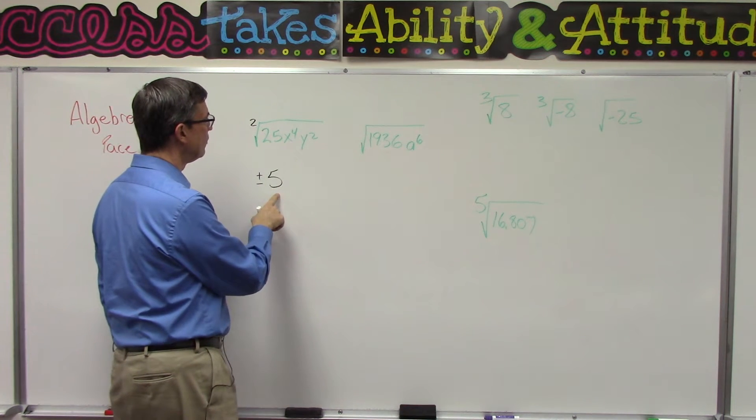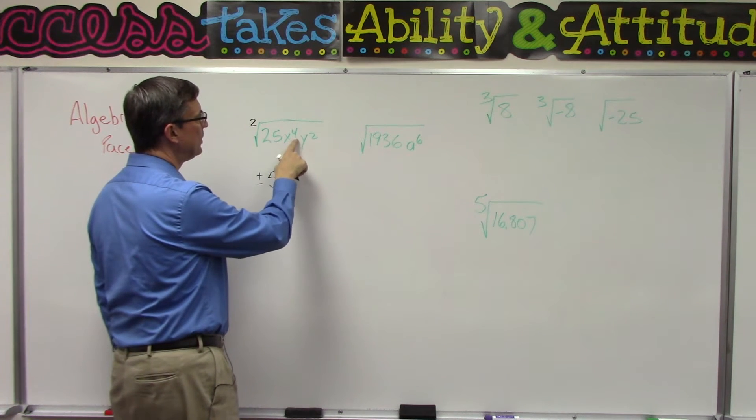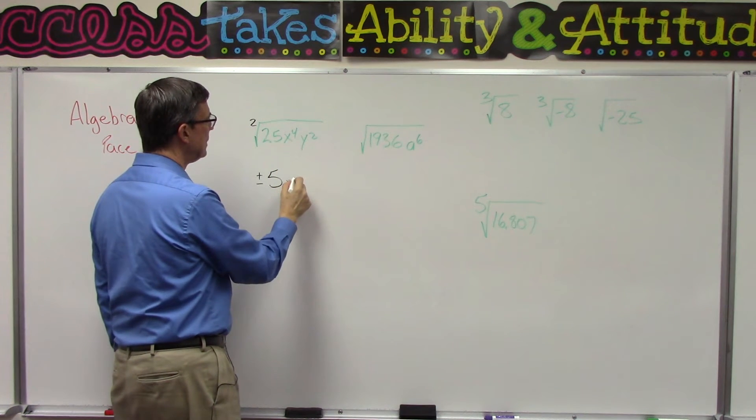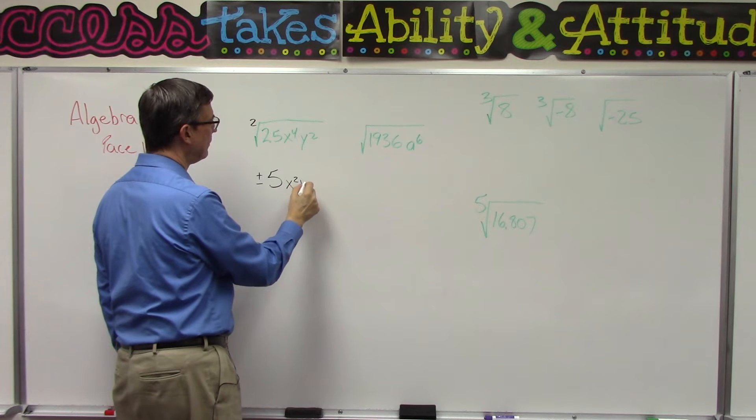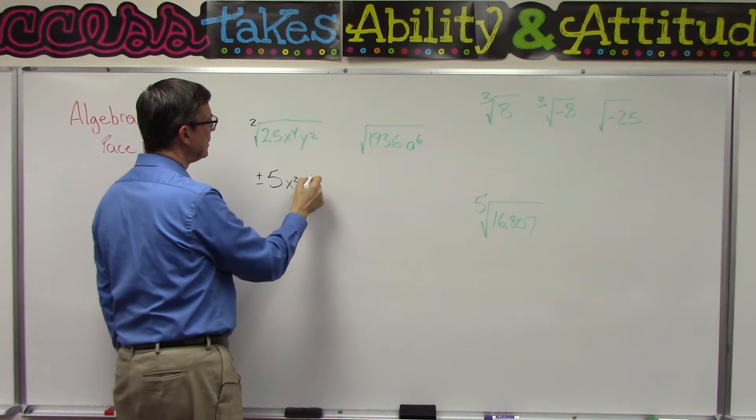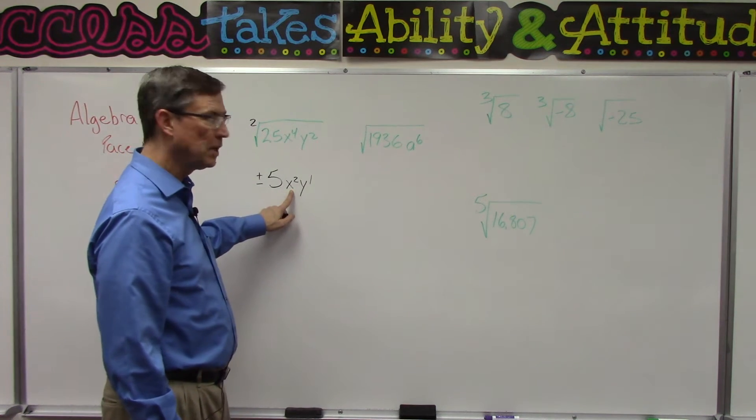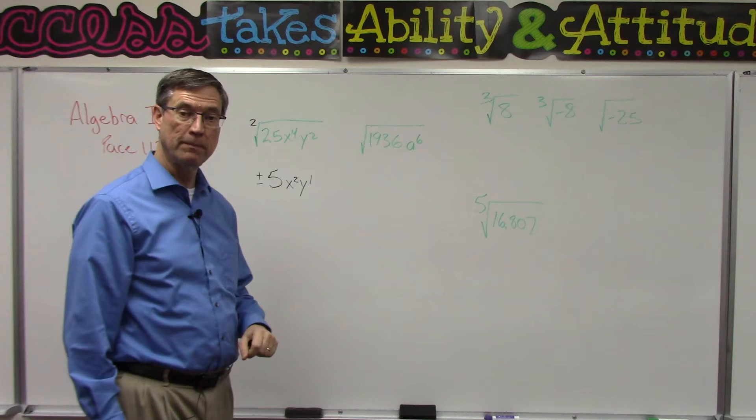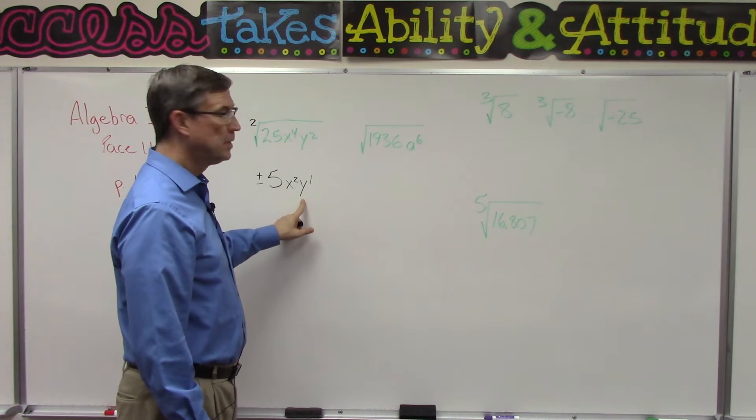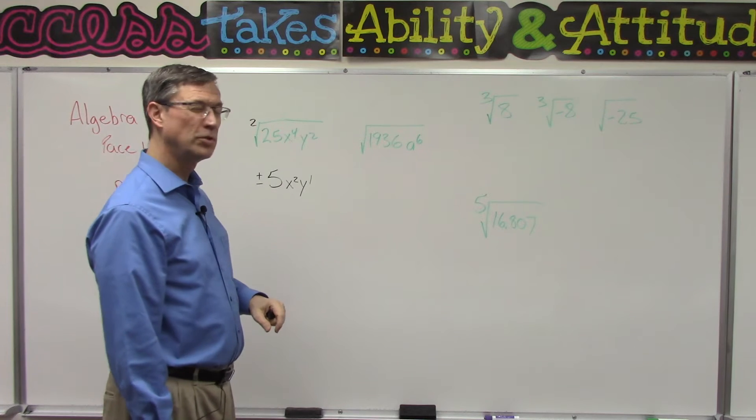Then what we do with these exponents is we cut them in half. If we're doing the square root, then we cut these exponents in half. Because x squared times x squared would give you x to the fourth, and y to the 1 times y to the 1, you'd add the exponents and you would get y squared. So the shortcut is just to think of cutting it in half.